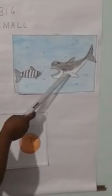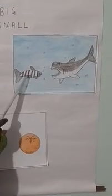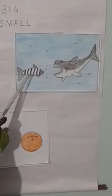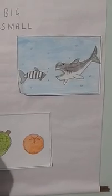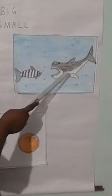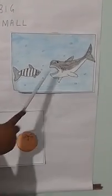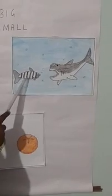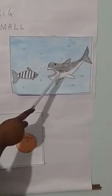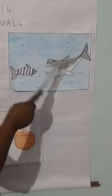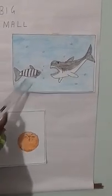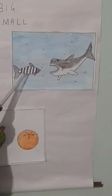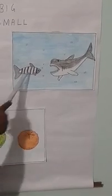Here we can see two different sea creatures. One is the shark, the bigger one. And the other one is the zebrafish, the smaller one. Now, can you tell me which fish is big in size? The shark is big in size and the other one is small in size. Because the size of the shark is huge, it is big, whereas the zebrafish is small compared to the shark.